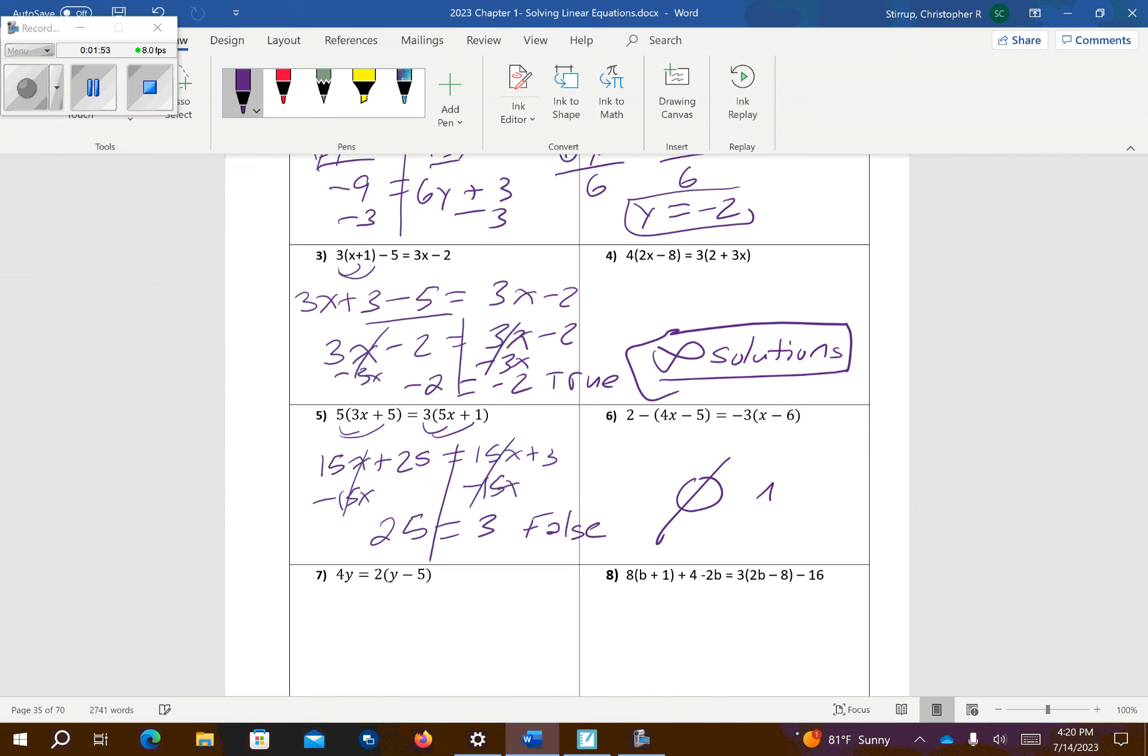So a lot of you might put something like this. You put no solution like that. That's not a 0, and that's called empty set, so that means that's no solution.